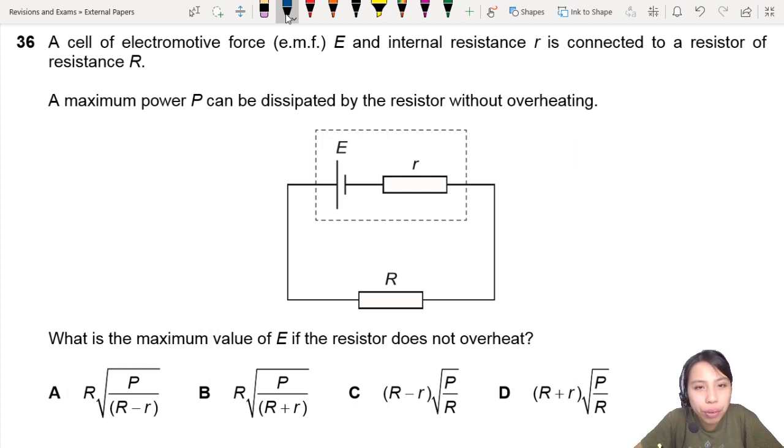A cell of electromotive force and internal resistance r is connected to a resistor. Maximum power can be dissipated by the resistor without overheating.